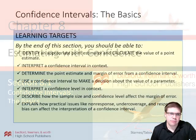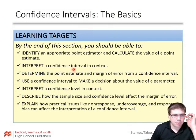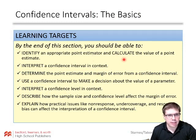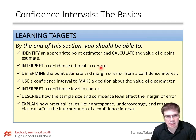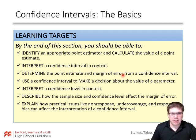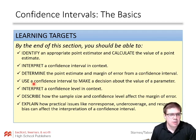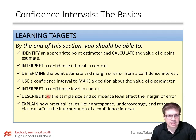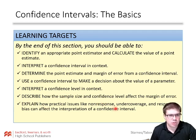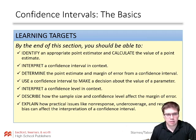By the end of this first section, you should be able to identify an appropriate point estimator and calculate the value of a point estimate. Interpret a confidence interval in context. Determine the point estimate and margin of error from a confidence interval. Use a confidence interval to make a decision about the value of a parameter. Interpret a confidence level in context. Describe how the sample size and confidence level affect the margin of error. And explain how practical issues like non-response, undercoverage, and response bias can affect the interpretation of a confidence interval.